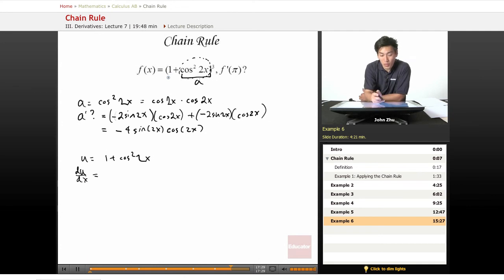So that our du dx equals, our du dx equals the derivative of cosine squared 2x plus 1, but the one term just simply becomes 0 when you take the derivative. So this just becomes negative 4 sine of 2x times cosine of 2x.